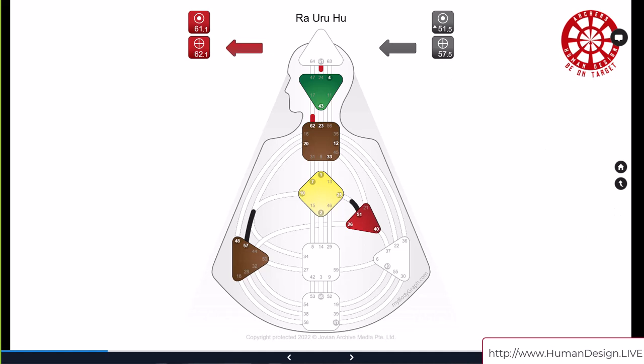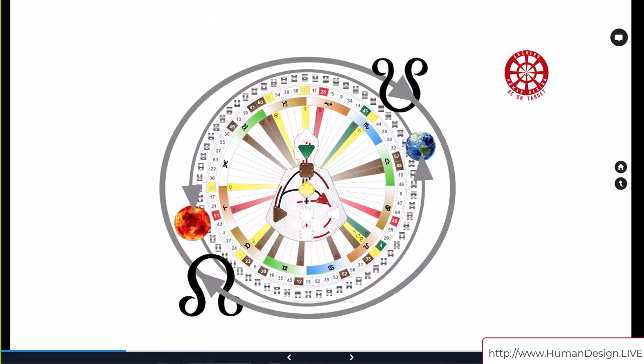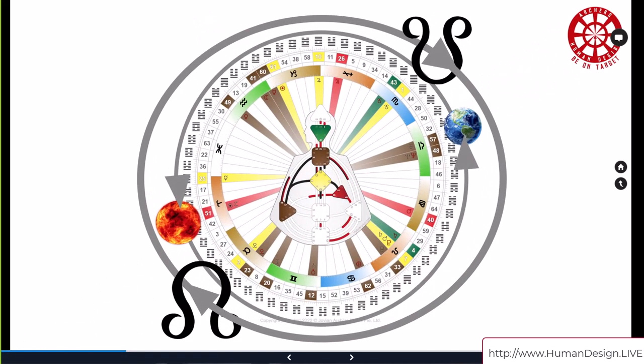Now nodes themselves are very different. When we look at the Sun and Earth, it's moving around the wheel in this direction, counterclockwise. The nodes are moving around the wheel in a clockwise fashion. The nodes take a long time, like three and a half months or something, to go through a gate. Very different. Not only do they literally move in a different direction, but they're not objects. They're windows.